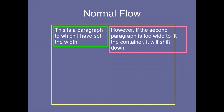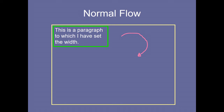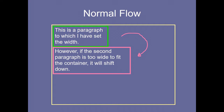Now the second paragraph is too wide to fit the container, so it will go down. It is not adjusting in that container, so it comes to the next row — below the first paragraph under the normal flow. Whatever content goes beyond the container boundary will automatically come below the first paragraph. This adjustment happens generally with the help of div.